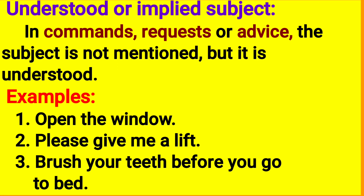These are all imperative sentences. Examples: 'Open the window.' — there is no subject, but we can understand. 'Please give me a gift.' — no subject, but we can understand. 'Brush your teeth before you go to bed.' — this is advice. So, we can understand the subject even though it is not stated. That is called understood or implied subject.